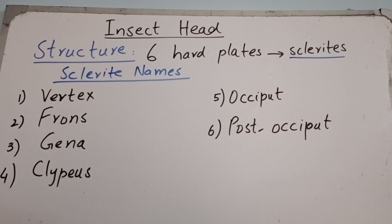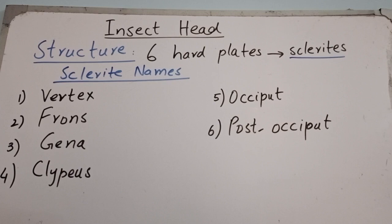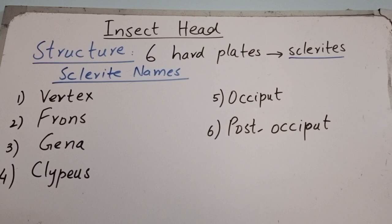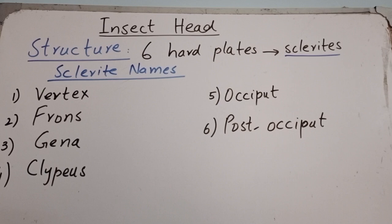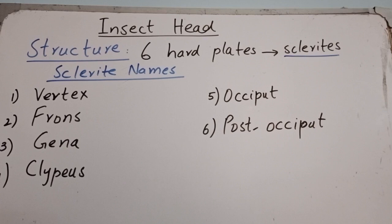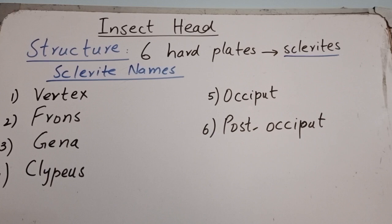The first sclerite is known as the vertex, which is like the forehead of the insect. The second sclerite is known as frons. The third is gena — the genae are present on the lateral side of the head, two in number, and are like the cheeks. The fourth is the clypeus. The fifth sclerite is the occiput and the sixth is the post-occiput. The first four sclerites — vertex, frons, gena, and clypeus — are visible in the anterior view, while occiput and post-occiput are visible on the posterior side of the head.